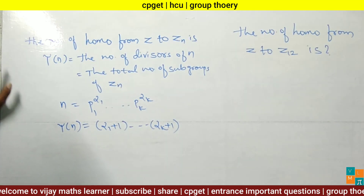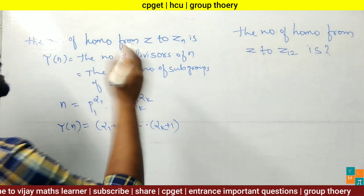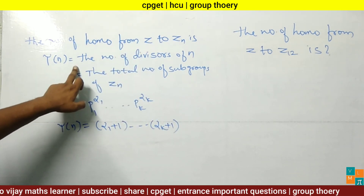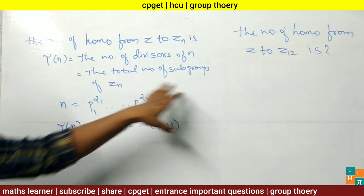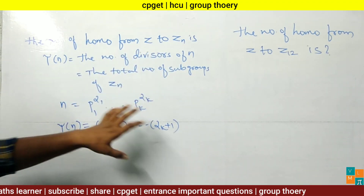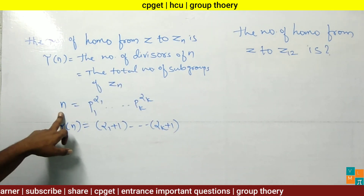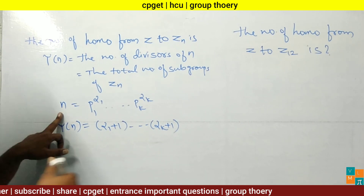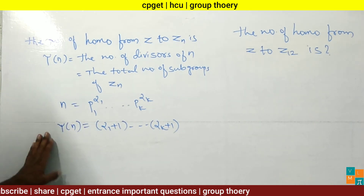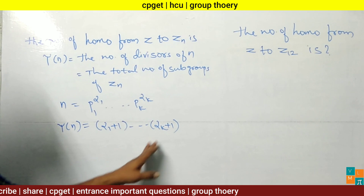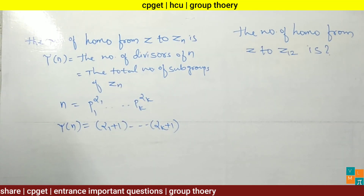The fifth result, the most important one: the number of homomorphisms from group Z to Z_n is τ(n), which equals the number of divisors of n, and also equals the total number of subgroups of Z_n. If n is any positive integer written as a product of prime powers, then τ(n) = (α₁+1)(α₂+1)···(αₖ+1). Using this formula, we find the number of homomorphisms from Z to Z_n.